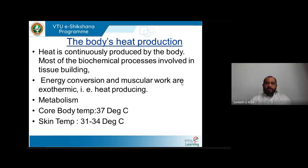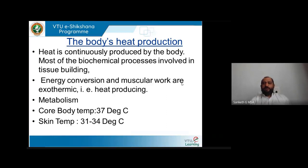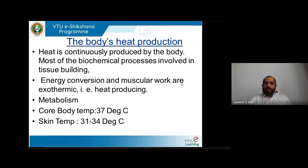The core body temperature — this is the international average — is 37 degrees Celsius inside the human body. On the skin it is supposed to be around 31 to 34 degrees Celsius. Whatever metabolism and reactions are happening inside the human body work to maintain this core body temperature and also maintain the outside skin temperature of 31 to 34 degrees Celsius. This is the foundation of the whole idea of thermal comfort.